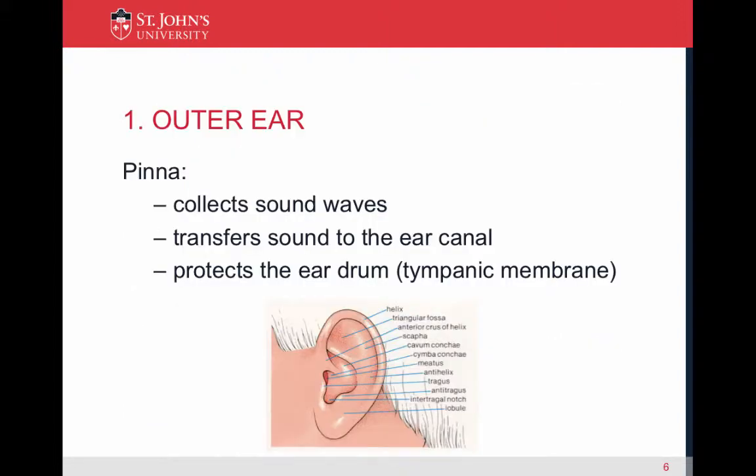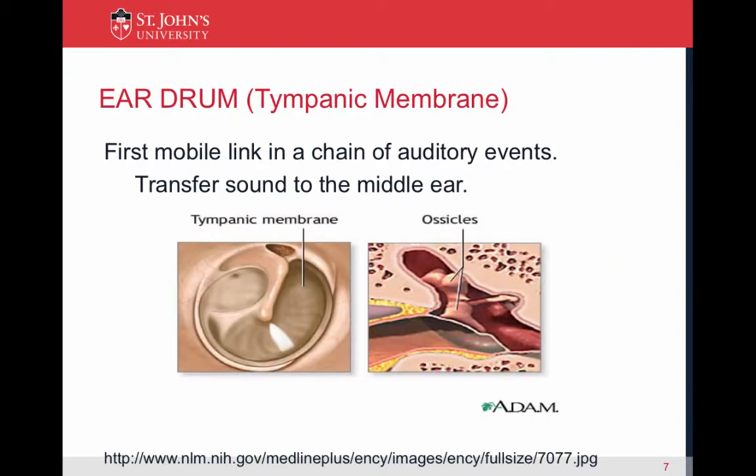The outer ear and the pinna collect sound waves, they transfer sound waves to the ear canal, and they protect the eardrum, which is also known as your tympanic membrane. Your tympanic membrane is the first mobile link in a chain of auditory events. It transfers sound from the outer ear to the middle ear.